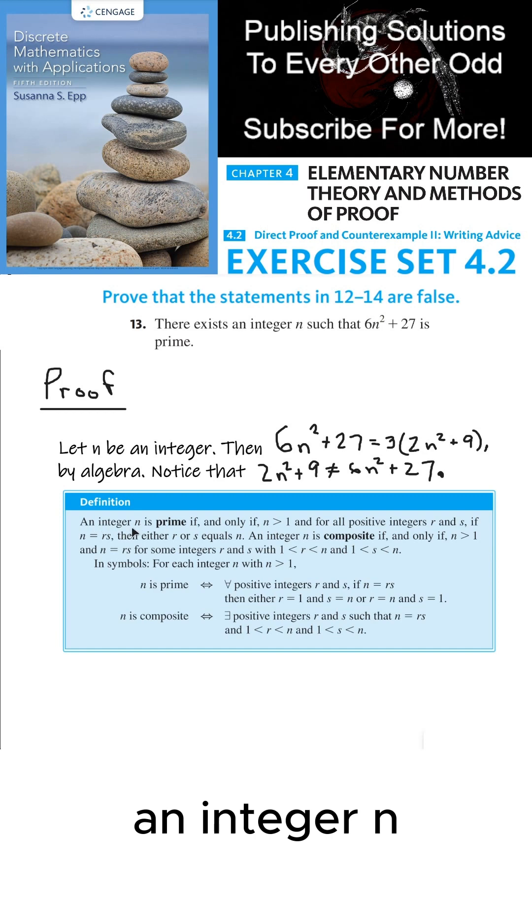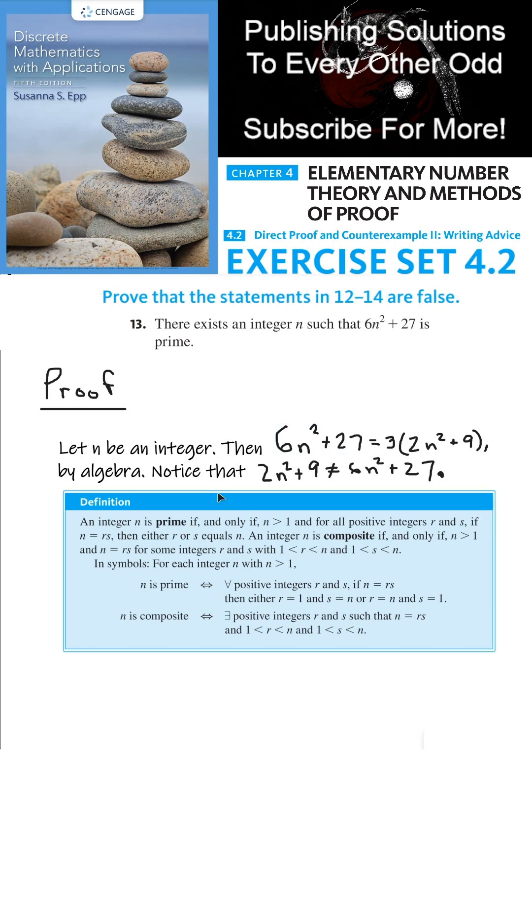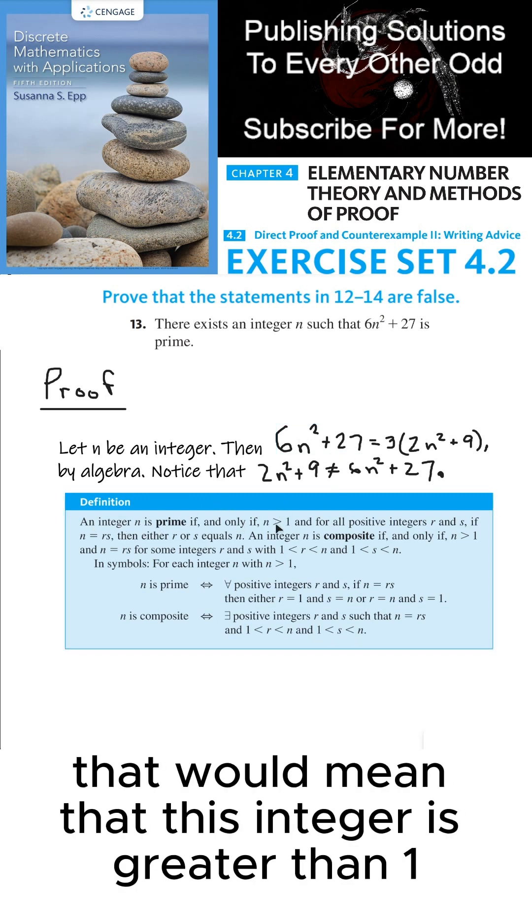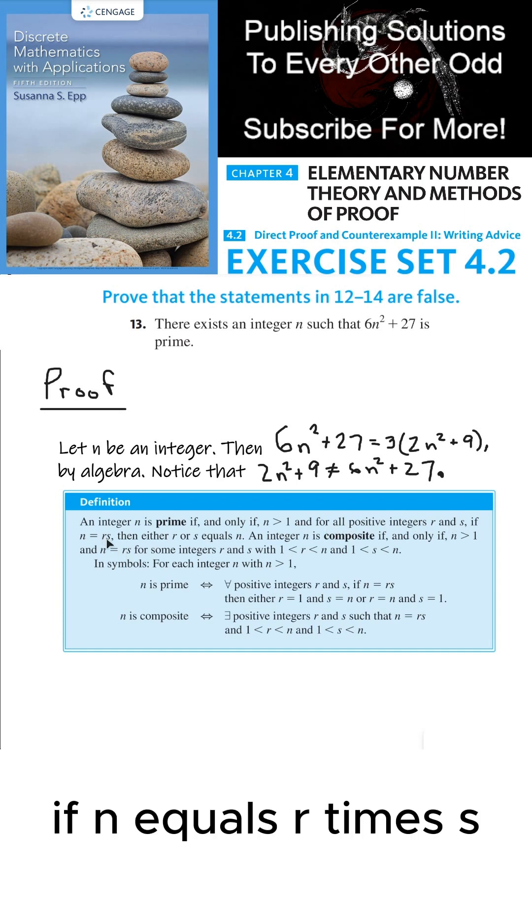An integer n, which by the way we're not using n, we're using 6n squared plus 27. So if that integer is prime, well that would mean that this integer is greater than 1, and for all positive integers r and s, if n equals r times s,